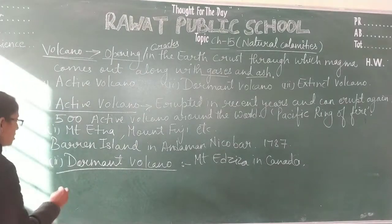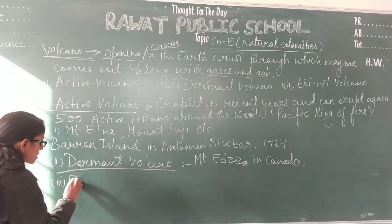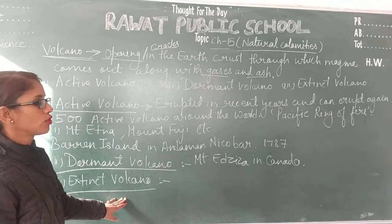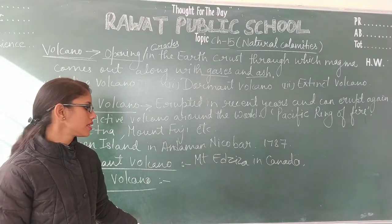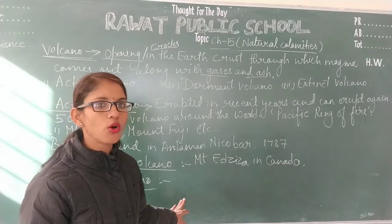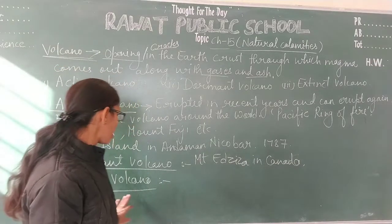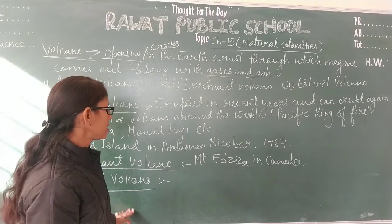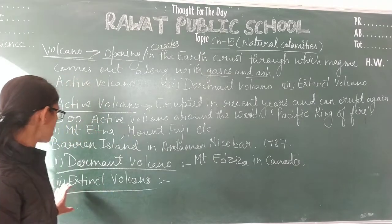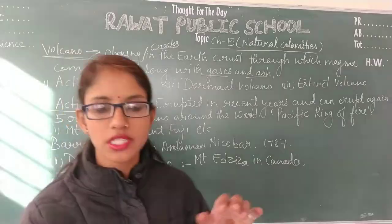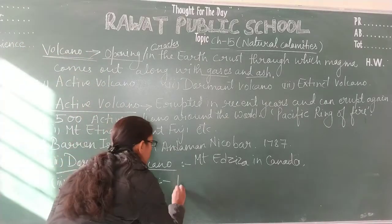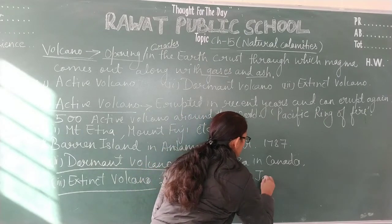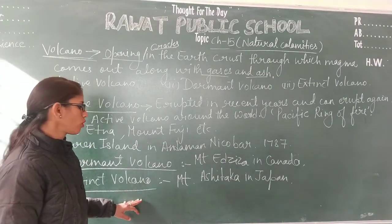The third type of volcano is the extinct volcano. Extinct volcanoes are those that have not erupted in recent years and there is no chance or very little chance of eruption in the future. These are not very dangerous. An example of an extinct volcano is Mount Ashitaka in Japan.